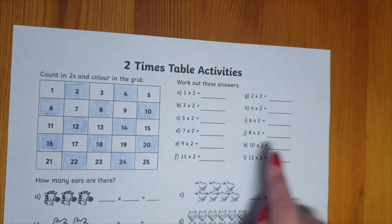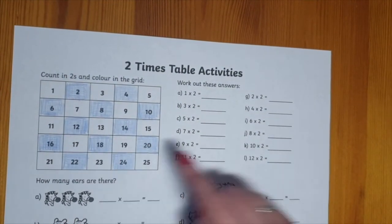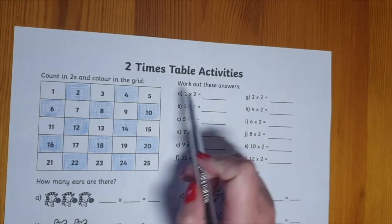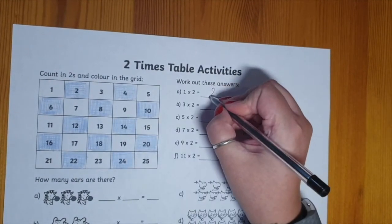Then we go to this section. Work out these answers and you can use this grid to help you. One times two is the first one coloured in? Two.